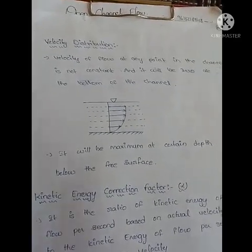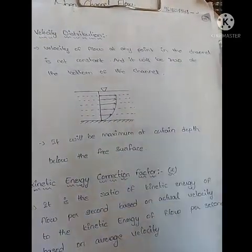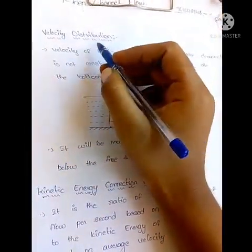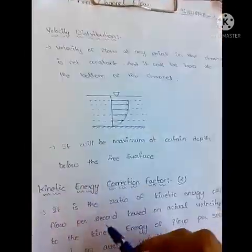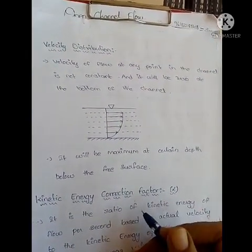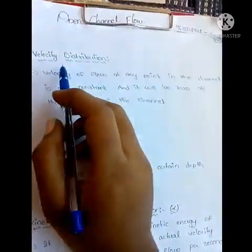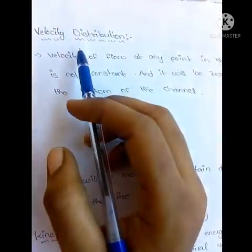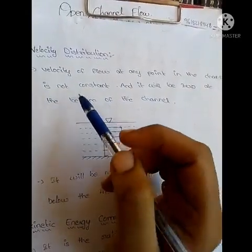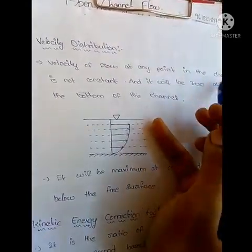Hi everyone, welcome to my channel. In this video we are going to discuss velocity distribution, kinetic energy correction factor, and momentum correction factor. We will go through them one by one. The first one is velocity distribution — what is meant by velocity distribution. The velocity of flow at any point in the channel is not constant.